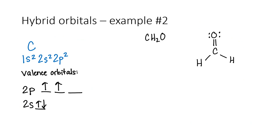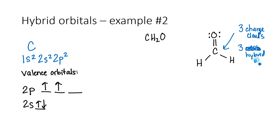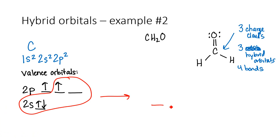Let's look at another example — again looking at carbon, but here we have a different molecule where carbon has atoms on three sides. It's got three electron clouds around it, so it's going to need three hybrid orbitals. We're going to combine two of the p orbitals and the one s orbital together to make three orbitals that are all equal in energy, made from one part s and two parts p. We call them sp2 orbitals. We still have one unhybridized 2p orbital. So we've got one unhybridized orbital and three hybridized orbitals.